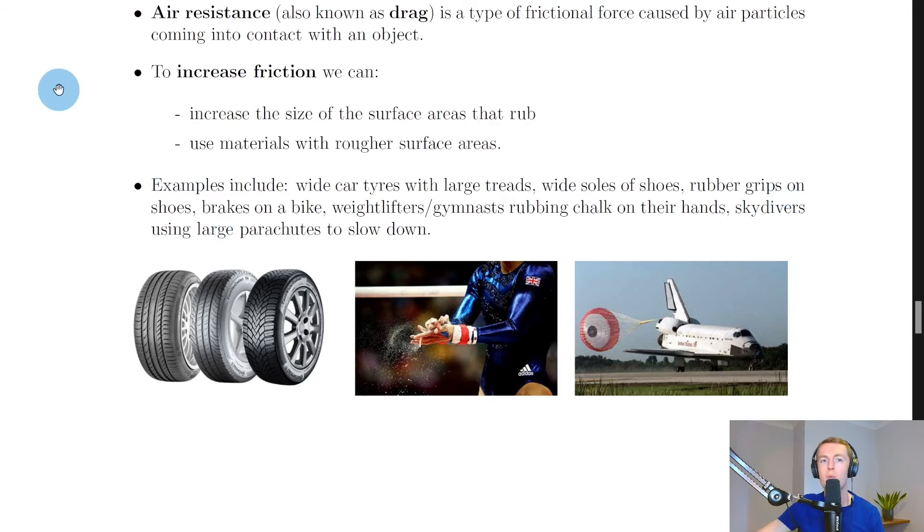Going back to the notes now, we're going to look at ways in which we can increase friction and also decrease friction. To increase friction first of all, we can increase the size of the surface areas that rub together, or we can use materials with rougher surface areas. Some examples of this include wide car tyres with large treads. The treads of a tyre are the grooves that you can see in this picture. The wider the tyre, the more surface area is going to be in contact with the ground, and therefore the larger the friction force. We could also say wide soles of shoes, rubber grips on shoes.